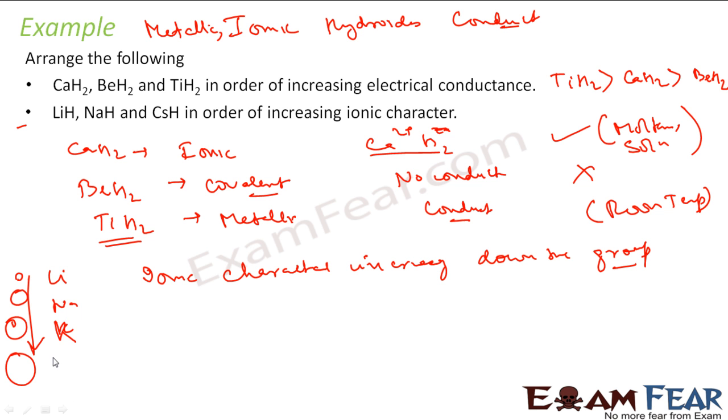So if you go down the group, ionic character is increasing. Because the size of atom is increasing and you can lose electron easily. So if you talk about the ionic character, my CSH will be maximum ionic, then I have NAH will be less ionic, and then I have LIH will be all the more less ionic. So this guy is very ionic, this guy is less, this guy is all the more less.